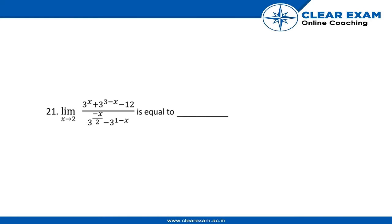So the question is: limit x tends to 2, 3x plus 3 to the power 3 minus x minus 12, divided by minus x by 2, 3 to the power minus x by 2 minus 3 to the power 1 minus x, is equal to...